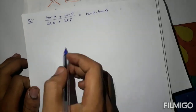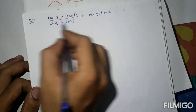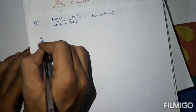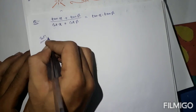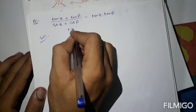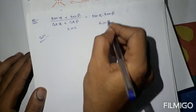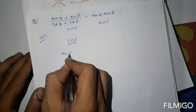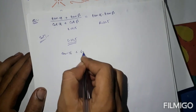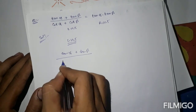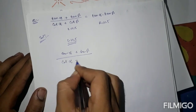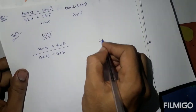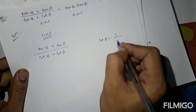The next question is: (tan alpha + tan beta) upon (cot alpha + cot beta) equals tan alpha times tan beta. We follow the same procedure. This is LHS and this is RHS. Take LHS: (tan alpha + tan beta) upon (cot alpha + cot beta). We can write cot theta as 1 upon tan theta.